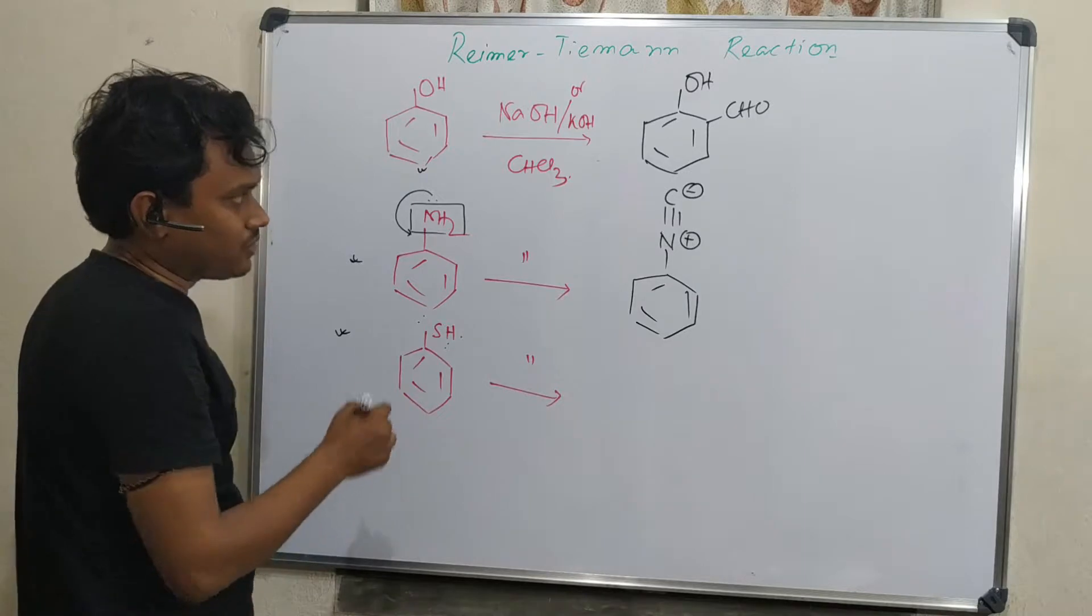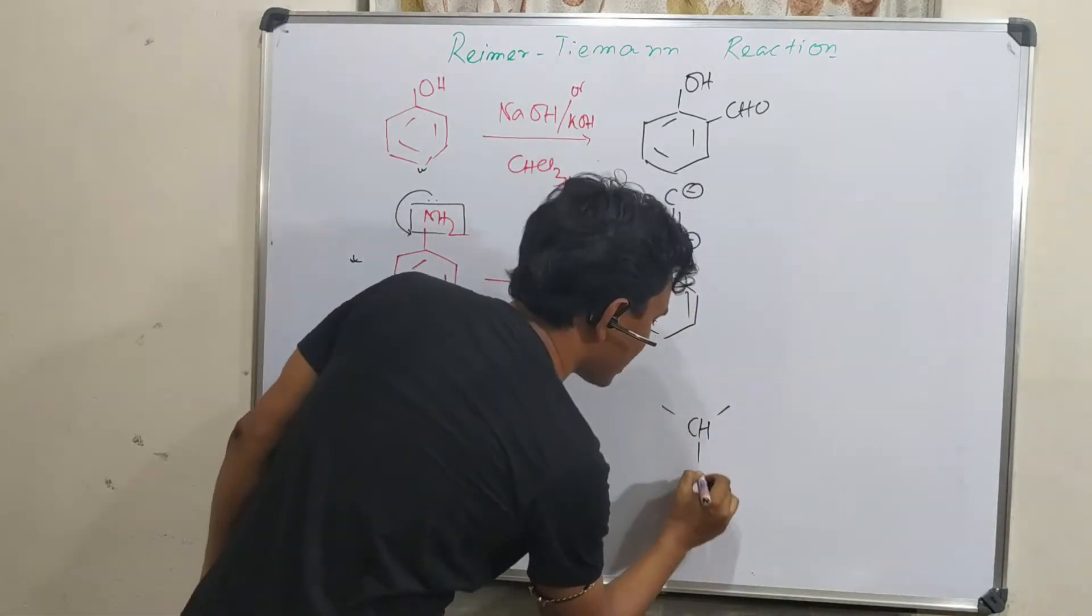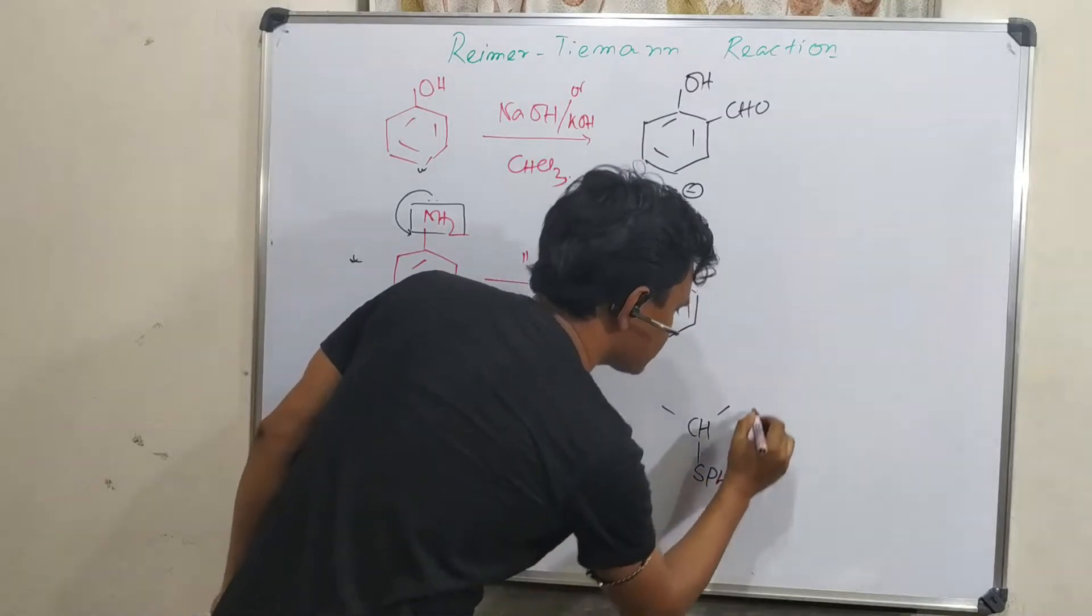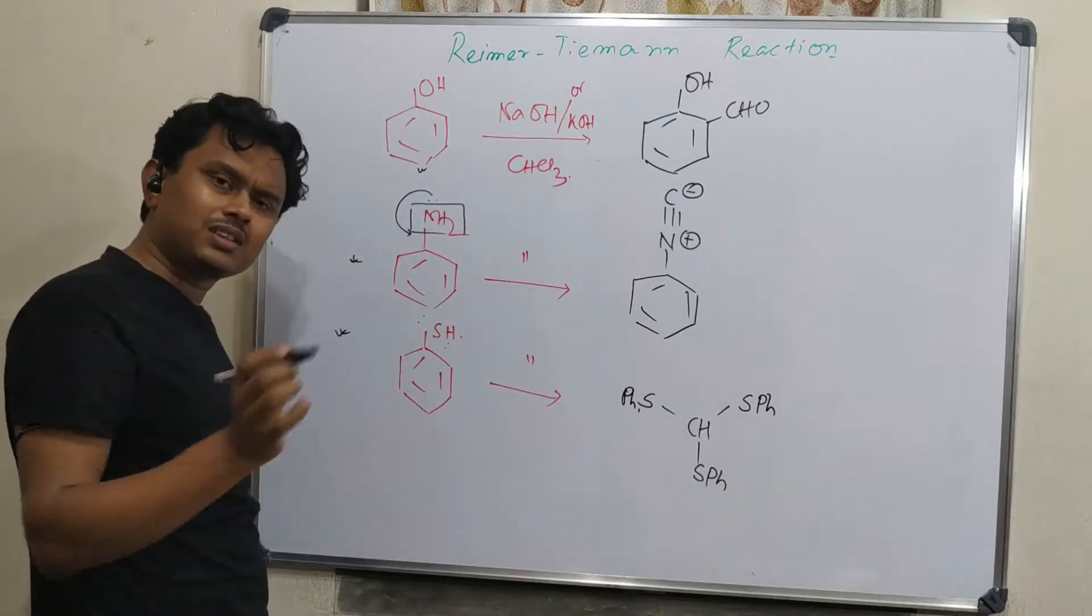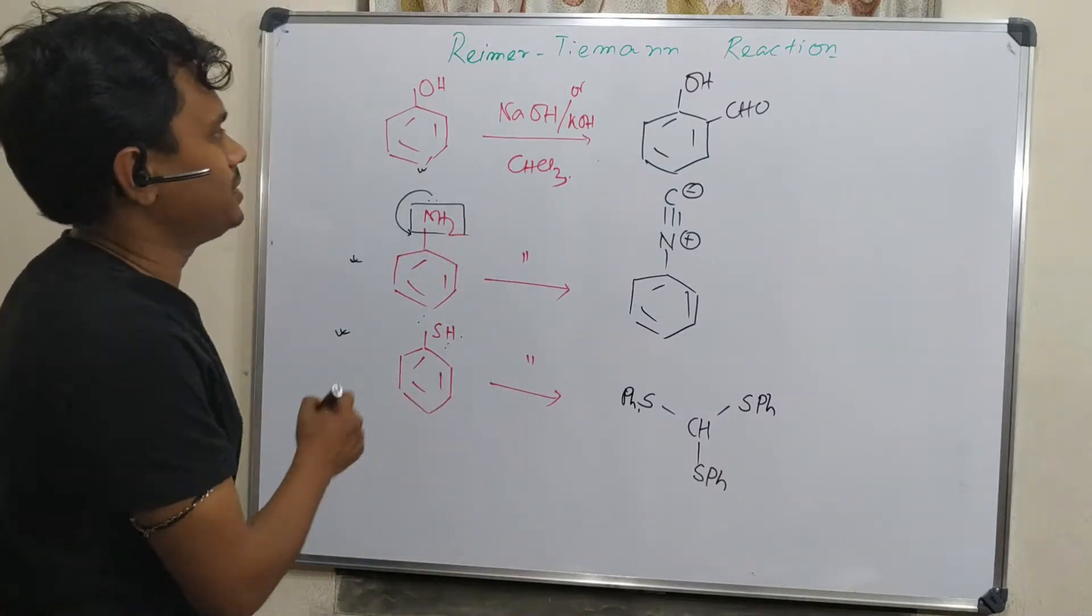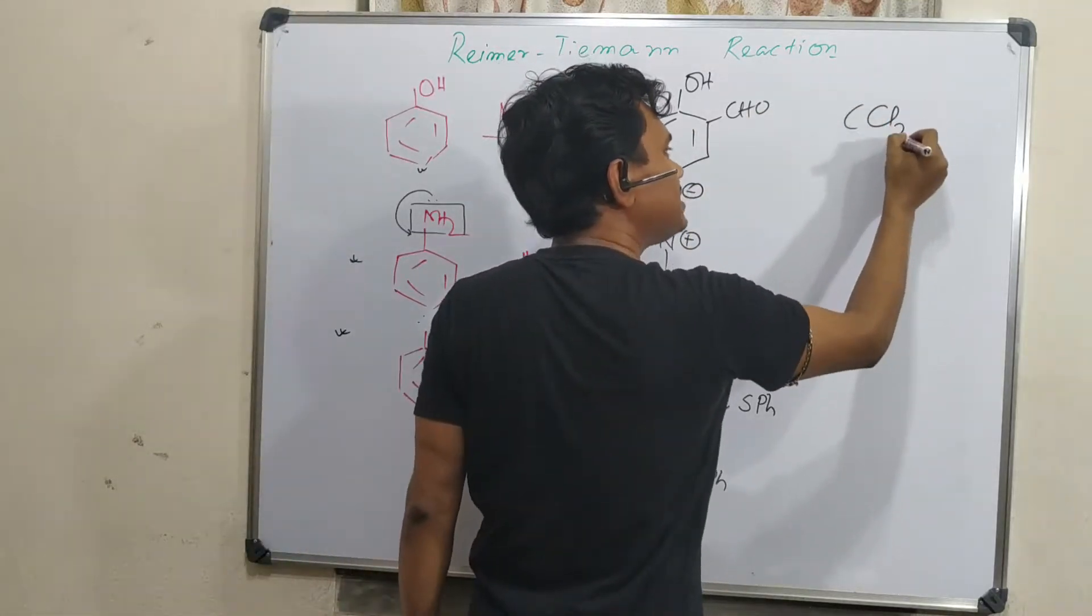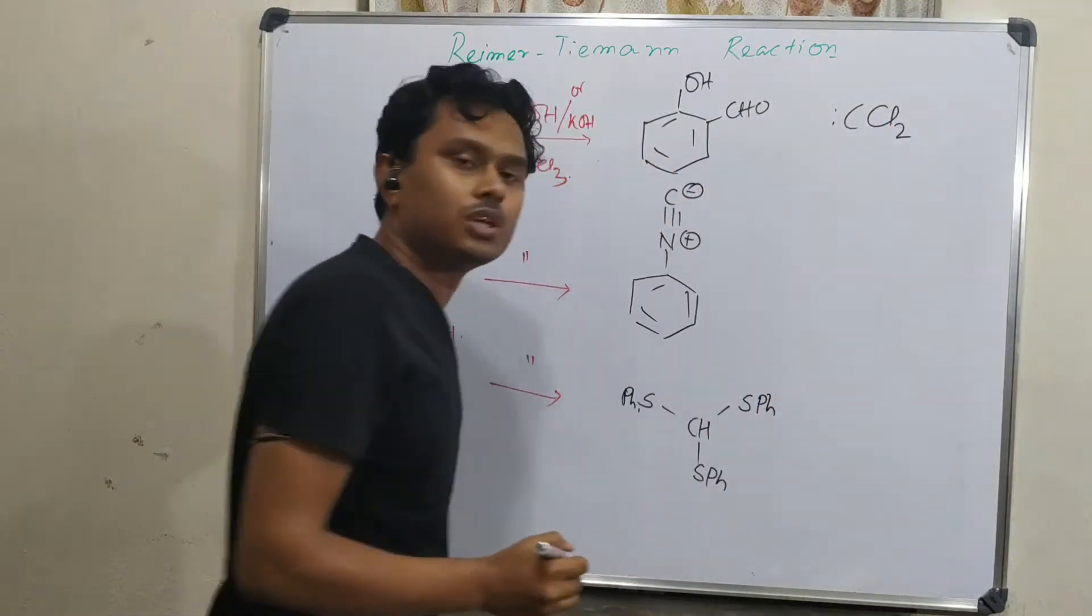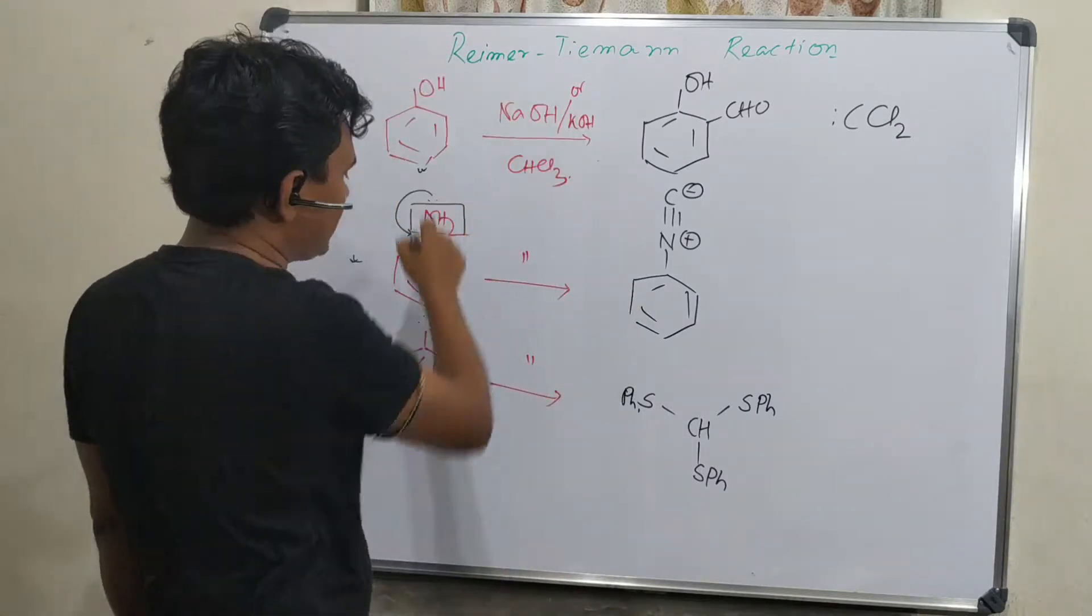And what does thiophenol produce? This thiophenol produces tri-substituted, means tri-thiolated. So, all these three produce different reactions. Question is why? It is true that all the reactions go through this dichlorocarbene intermediate. And this dichlorocarbene intermediate reacts in every case differently.